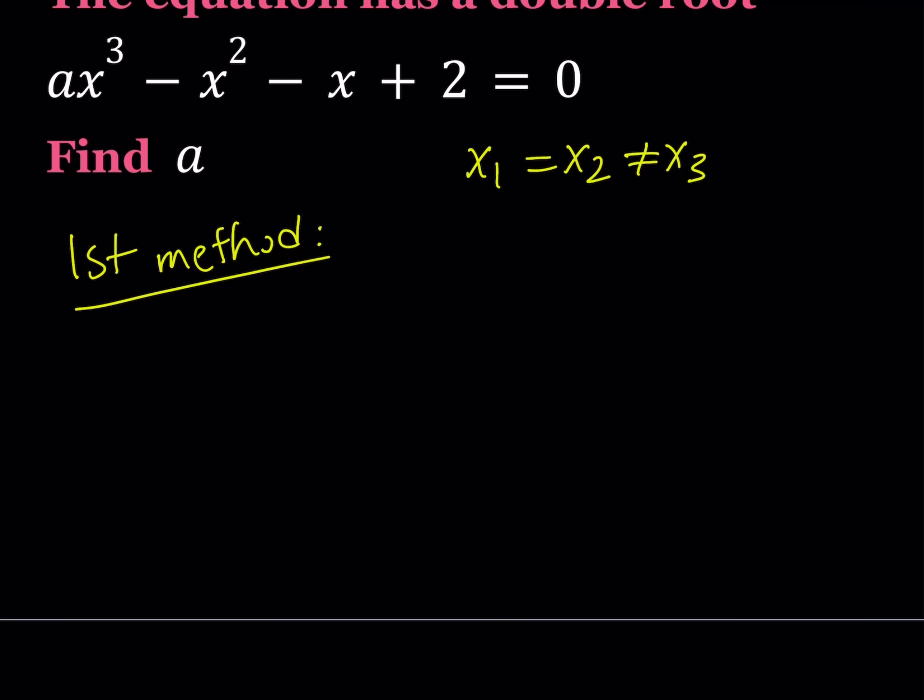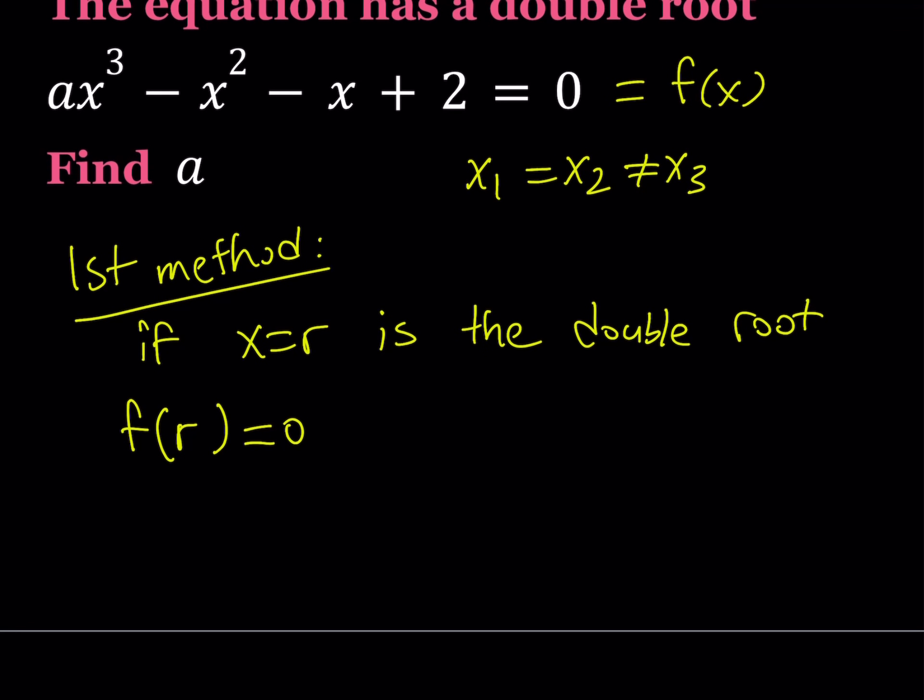If x = r is the double root, then from here we can say two things: f(r) needs to be 0, and by f I mean I'm setting this whole thing equal to f(x), f(r) = 0, and we also get f'(r) = 0.